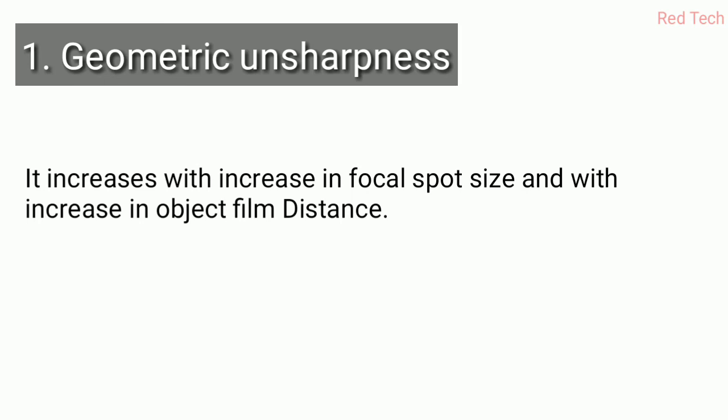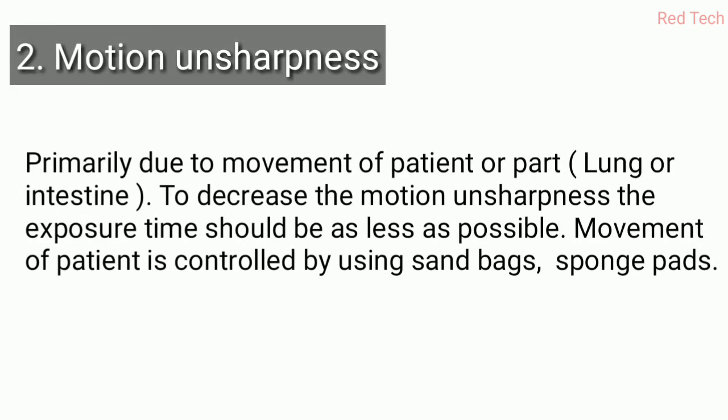Number one is geometric unsharpness. It increases when the focal spot size increases, and also increases when the object-to-film distance increases. Increasing object-to-film distance creates geometric unsharpness, meaning the shape cannot be accurately represented in the image.